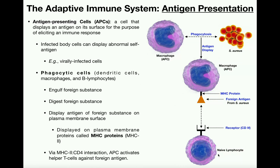Right down here is a naive lymphocyte. In the context of the immune system, naive means the white blood cell has not yet been sensitized to that specific pathogen. So this naive lymphocyte is just minding its own business, ready to take action, but it does not yet have the information on this most-wanted-list pathogen. On the plasma membrane of this naive lymphocyte, it has a receptor that will be able to interact with the antigen from the antigen-presenting cell.